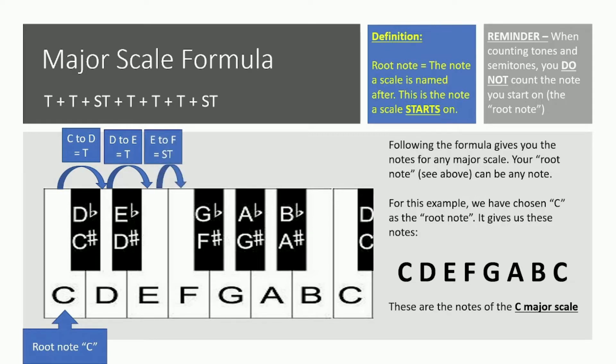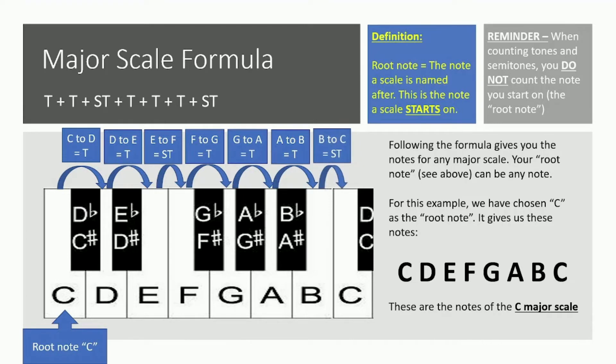Then we've got a semitone jump from E to F. Then a tone from F to G. We're just following the formula at the top of this slide. Next another T, from G to A up two semitones. Then from A to B another T. Then the final step in the formula, B to C, another semitone.